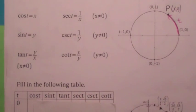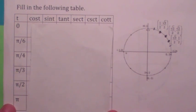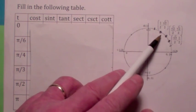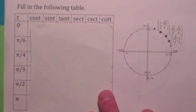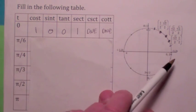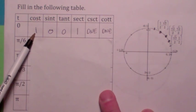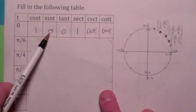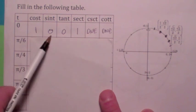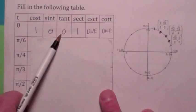Let's use the definition to compute some specific trig functions in the first quadrant. My advice is do not memorize this chart, but rather learn these special points and be able to convert them into different quadrants. At t = 0, the x-coordinate is 1, the y-coordinate is 0. So cosine(0) = 1, sine(0) = 0, tangent = y/x = 0, and secant = 1 over cosine = 1. The cosecant and cotangent don't exist because they would be 1 over 0, which is undefined.